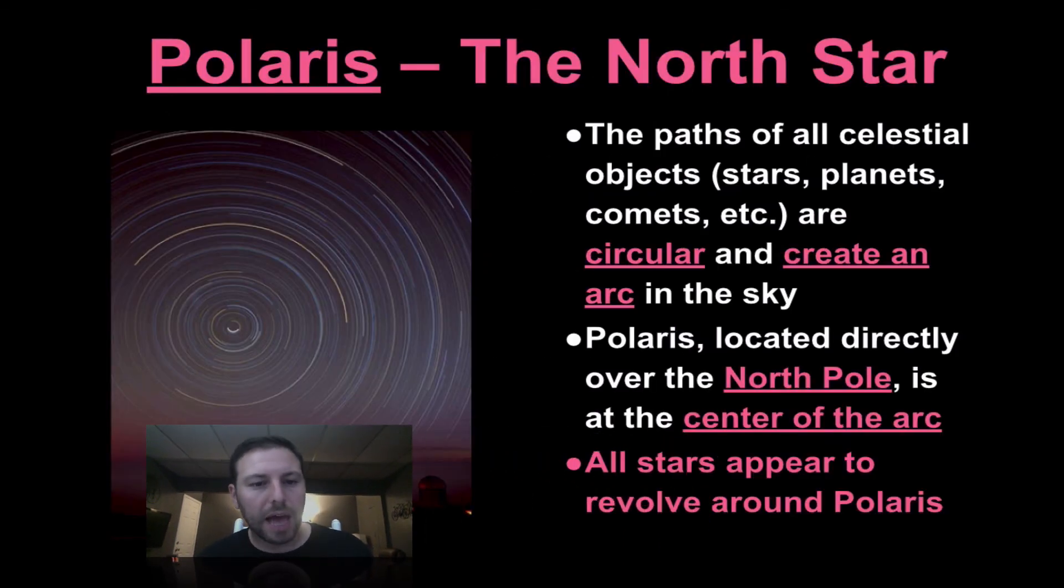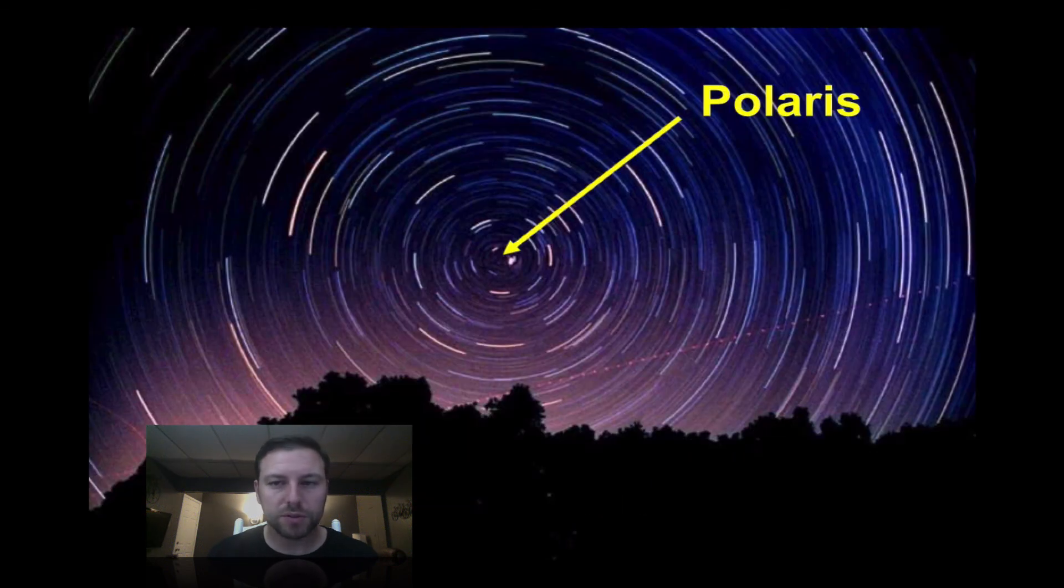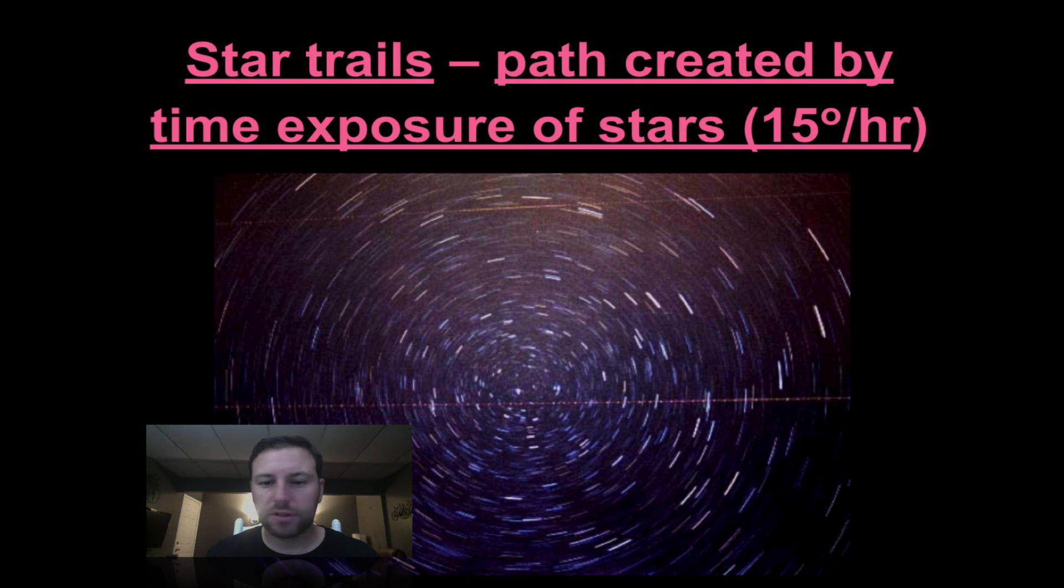Remember that as we rotate we can create star trails around that to help us show that once again that Earth is rotating. And there's Polaris straight towards the middle. And just some more star trails with 15 degrees per hour is our rate of rotation. Remember we can figure that out from the arc that the star trail creates.